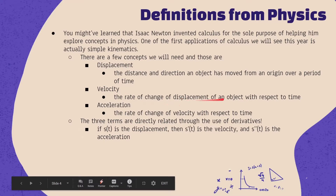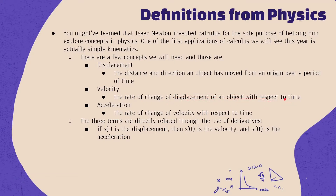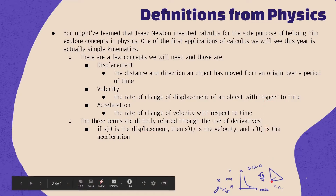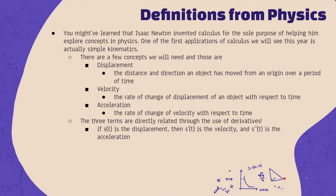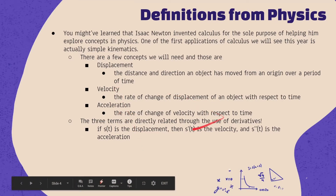Velocity is the rate of change of displacement of an object with respect to time. So if from here to here was 50 meters, how fast was it moving? We know speed is distance divided by time, but since we're talking about displacement we also need the direction. If this was 50 meters and I move at 5 meters per second, it takes 10 seconds, but for velocity I also need to know the direction.